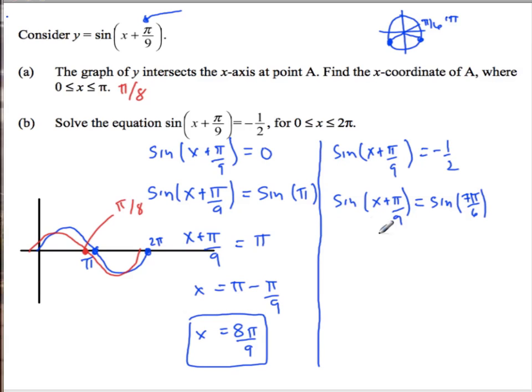So then x, get rid of the sines, x plus pi over 9 equals 7 pi over 6. And then x equals 7 pi over 6 minus pi over 9. And I don't feel like doing that math right now.